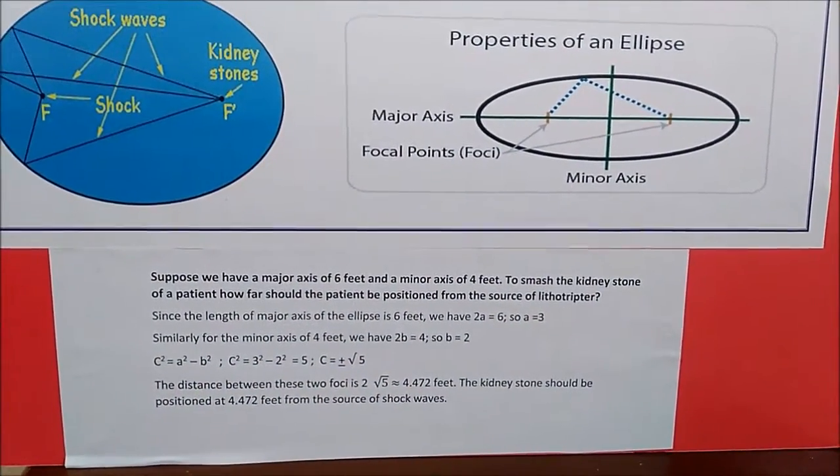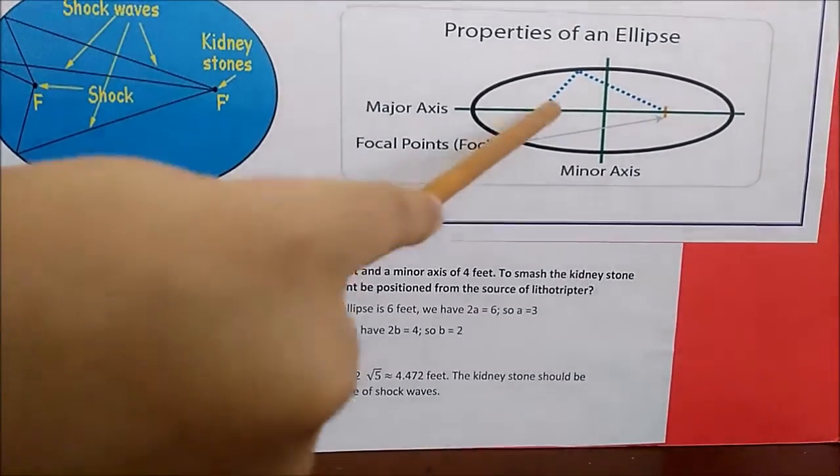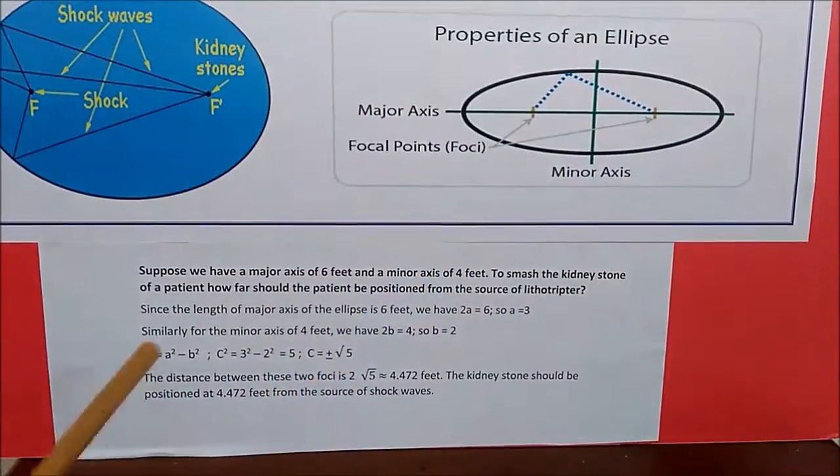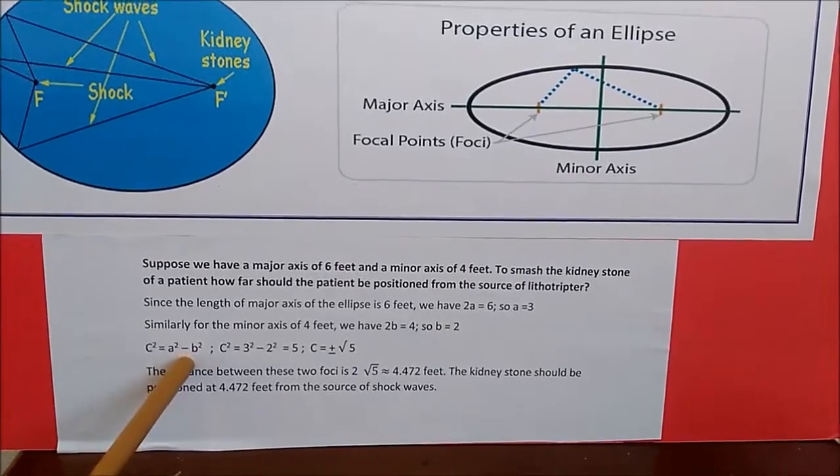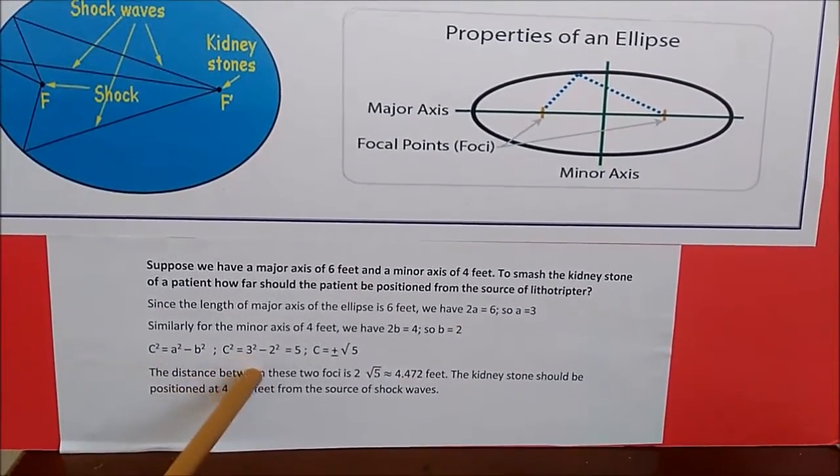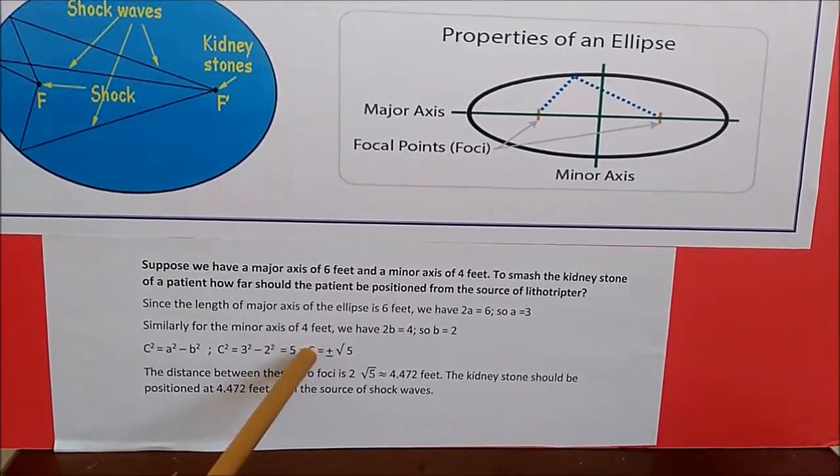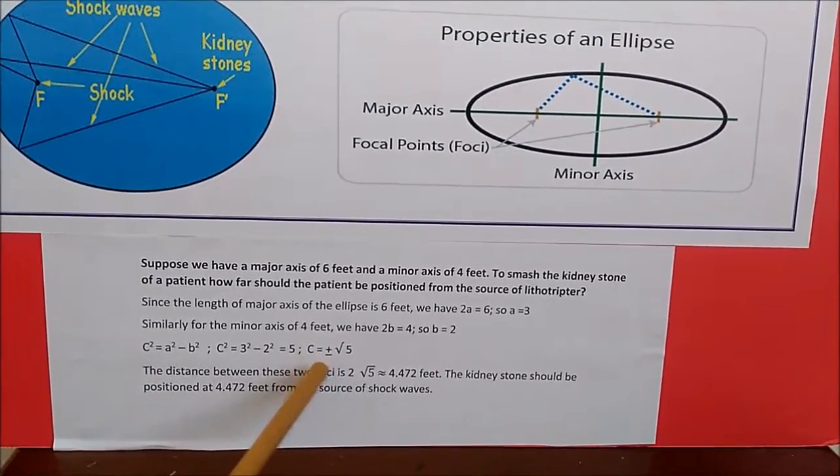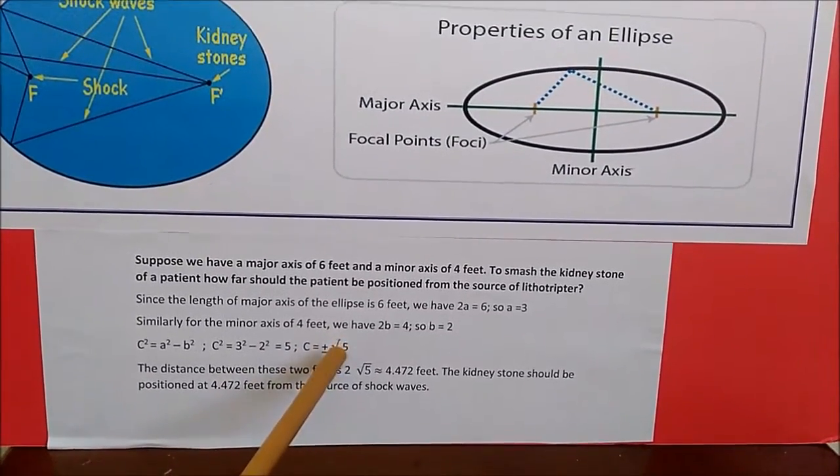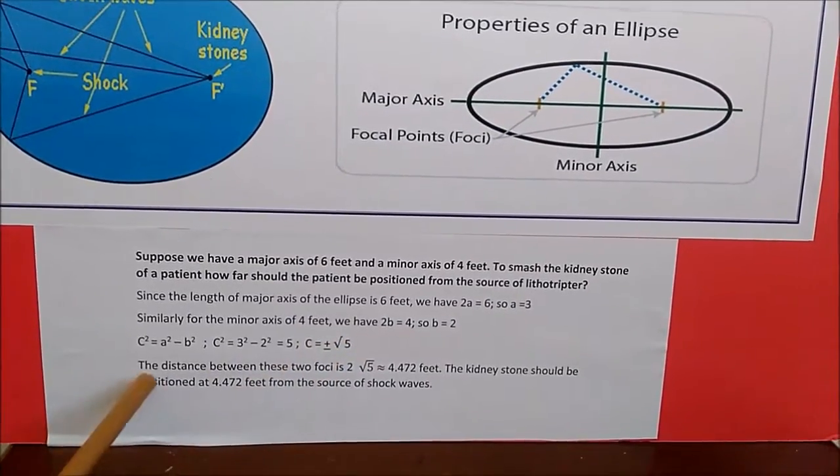Now let us find the answer. So c, which is the distance between here to here, is c squared equals a squared minus b squared, which is equal to 3 squared minus 2 squared, which is equal to 5. So c is equal to the square root of 5.